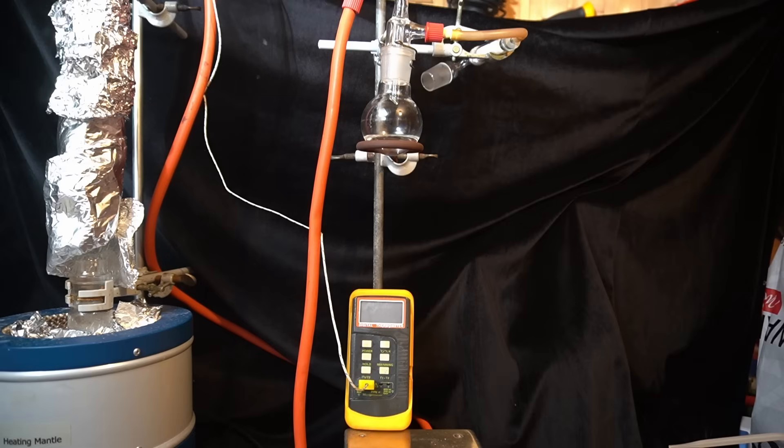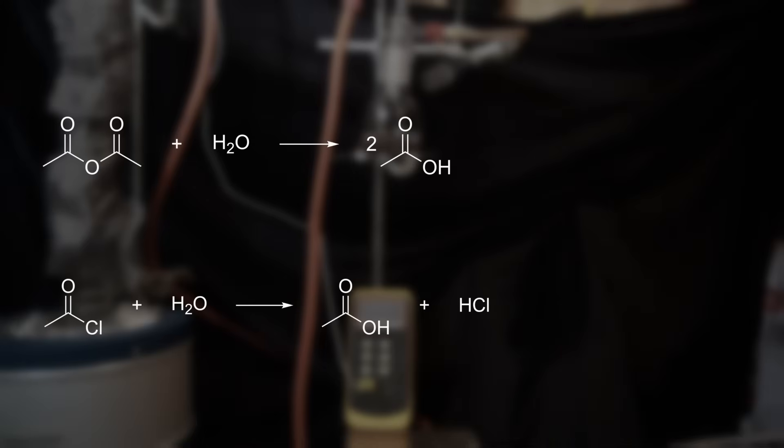The second major difference, and main reason I prefer the anhydride over the chloride, are the byproducts created during reactions. Acetic anhydride releases acetic acid during reactions, which doesn't smell very nice, but otherwise it doesn't do much.